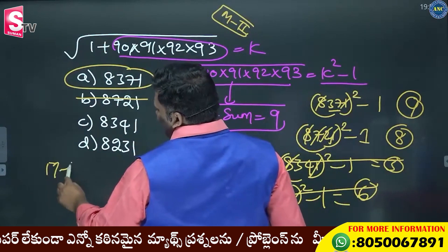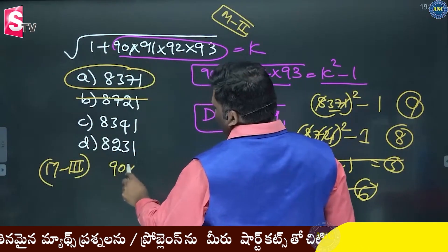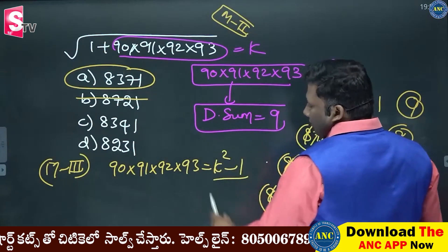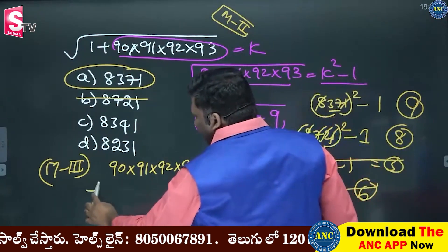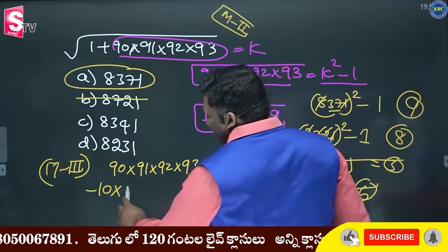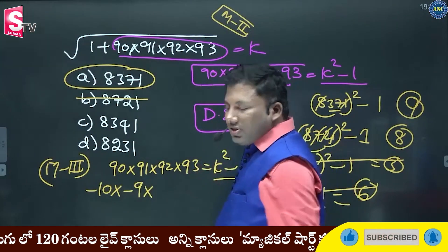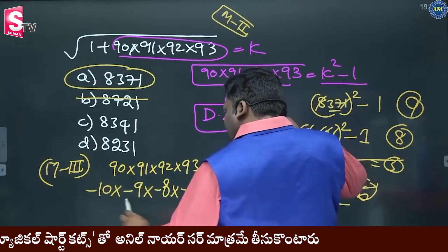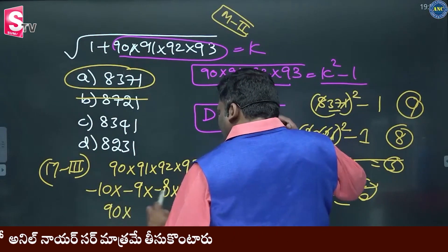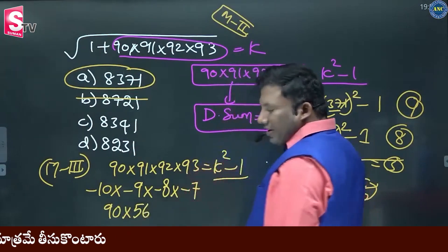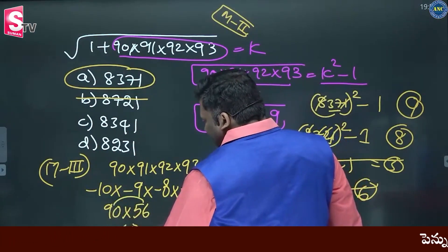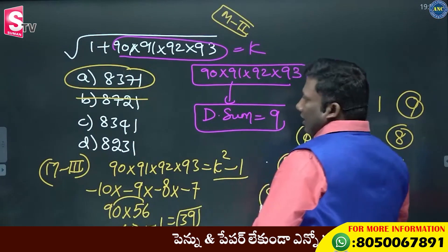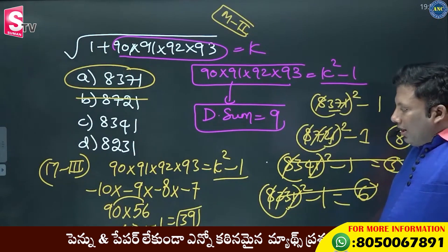Method 3. Be very careful with the answer. 90 into 91 into 92 into 93 equals k squared minus 1. 90 divided by 100 minus 10, looking at last two digits. 91 divided by 100 minus 9. 92 divided by 100 minus 8. 93 divided by 100 minus 7. 7 eights are 56. It is 0, 56 and it is 40. 40 minus 1: you need 39.